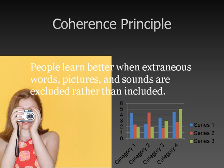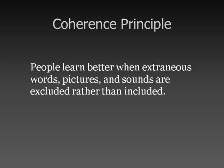In this example, the goal is to communicate the definition of the coherence principle. When viewing the screen, there's a lot of information that does not support the goal. For example, the background is busy, it has many pictures, and a graph that does not necessarily support the definition of the coherence principle.